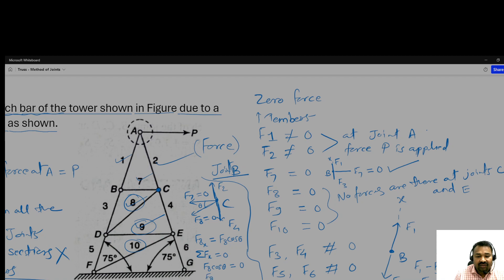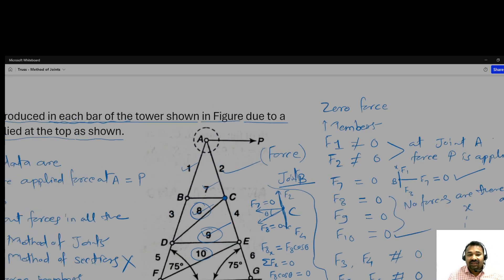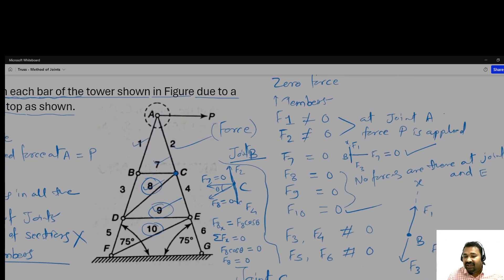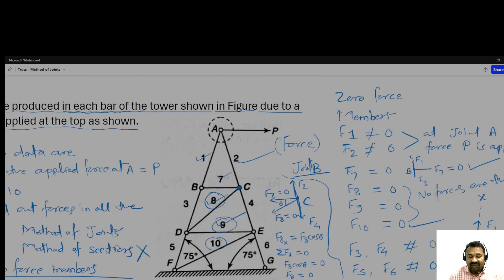That's why F8 is zero, F10 is zero. In this way, we have identified the zero force members and mathematically proved how we can claim these members are zero force members and why the other members are not.